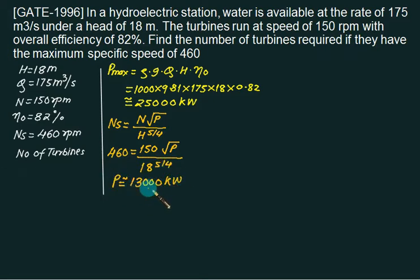So one turbine will produce 13,000, total required is 25,000. So approximate number of turbines will be equal to 2. 25,000 divided by 13,000. Answer is 2.